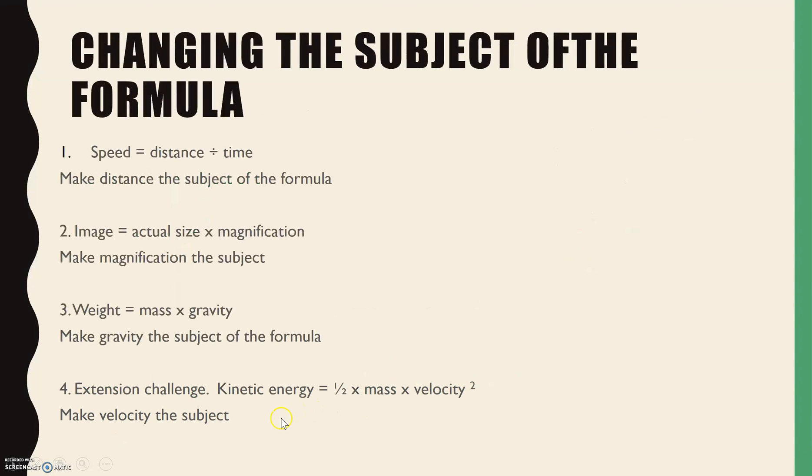So to apply this to a science example, not just biology, we've got some physics in here as well. Here we've got some formulas and you need to stay away from using those triangles where you just cover your hand on one part to work out what it is. Because if you can learn how to rearrange the formula, you can do it without a triangle. You can do it for anything you're given. So pause the video and have a go at these four examples in your book. Write out the original, write out the question, so for number one make distance the subject of the formula, and then write out the answer with your workings.